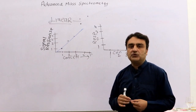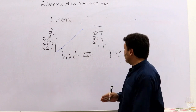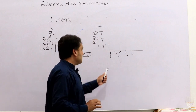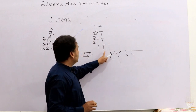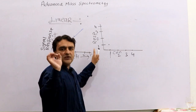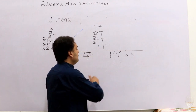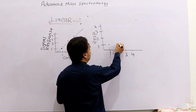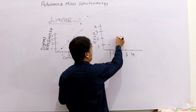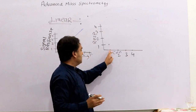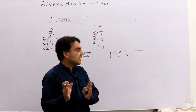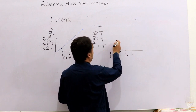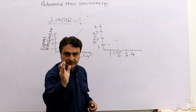To understand linearity: suppose at 1 nanogram of sample you get a signal of 1. If you increase the concentration to 2 nanograms, the signal should double to 2. But if the response is 1.2 or 1.3 instead of 2, that is not proportional.